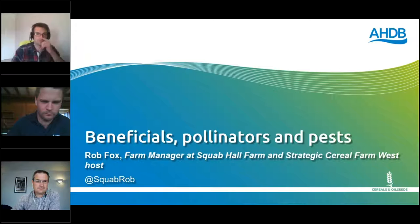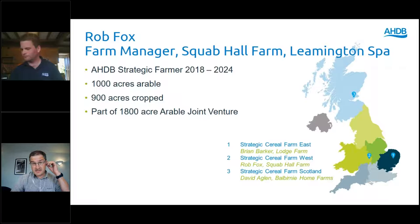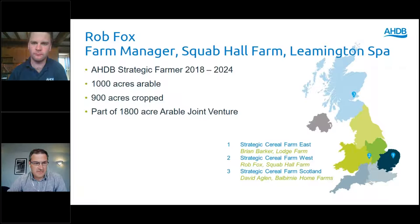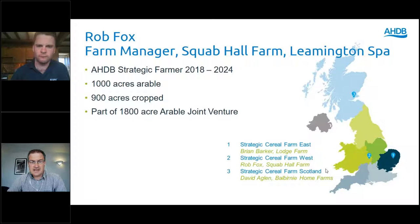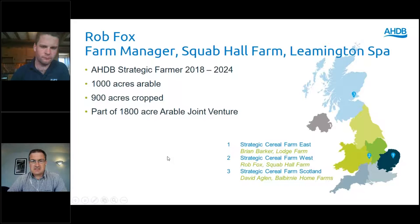Thank you Richard. Welcome everybody — would have been lovely to have you all here on the farm today but the current situation doesn't allow that. My name's Rob Fox. I'm the farm manager at the Evans family farm just outside Leamington Spa in Warwickshire. We're farming a thousand acres, all combinable crops on some varied Grade 3 clays — about 900 acres cropped — and we're part of a larger 1,800-acre machinery and labour share joint venture which I set up about six years ago.